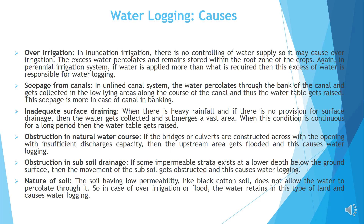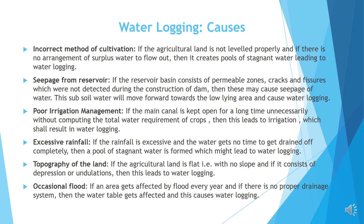Nature of soil: Soil having low permeability like black cotton soil does not allow the water to percolate through it. So in case of over-irrigation or flood, the water retains in this type of land and causes waterlogging. Incorrect method of cultivation: If the agricultural land is not leveled properly and if there is no arrangement for surplus water to flow out, then it creates pools of stagnant water leading to waterlogging. Seepage from reservoir: If the reservoir basin consists of permeable zones, cracks and fissures which were not detected during the construction of the dam, then this may cause seepage of water.